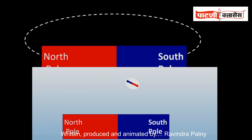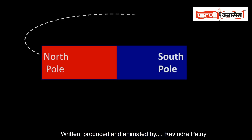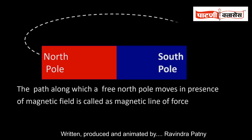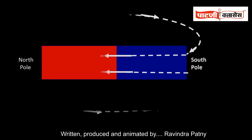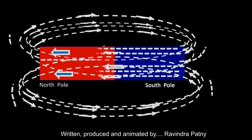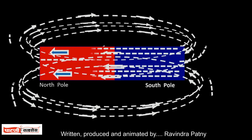The magnetic line of force is also called a field line. The path along which a free north pole moves in the presence of a magnetic field is called a magnetic line of force. Lines of force always move from the north pole outside the magnet, and from south pole to north pole inside the magnet. A large number of lines of force originate from the north pole and travel outside from north pole to south pole, then from south pole to north pole inside the magnet. The group of lines of force is called magnetic flux.